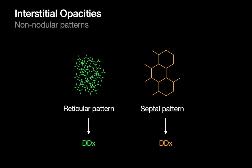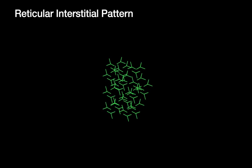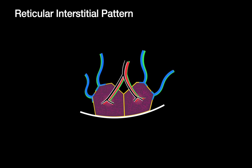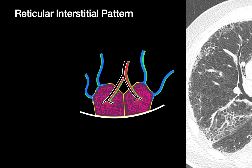We're going to discuss reticular and septal patterns and the differential diagnoses for both. Starting with the reticular interstitial pattern: thinking about the lobular anatomy of the lung, what's happening is the fine interstitium within the walls of the lobule — everywhere inside the secondary pulmonary lobule — has become thickened, so thick that we can now see it on CT imaging. This thickening is relatively uniform. I would describe the reticular interstitial pattern as a uniform thickening of the intralobular interstitium inside of a secondary pulmonary lobule.